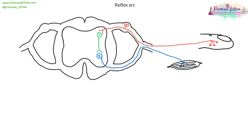At the finger end, you will almost always have a stimulus. In this case, let's use a drawing pin. This finger is going to touch a drawing pin — if your finger touched a drawing pin, you'd pull your hand away quite quickly. So you have a stimulus; the stimulus is the pin.